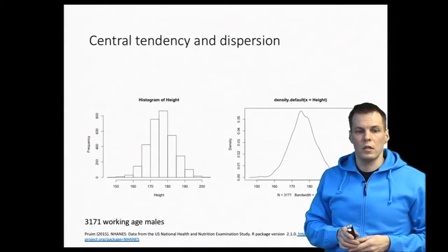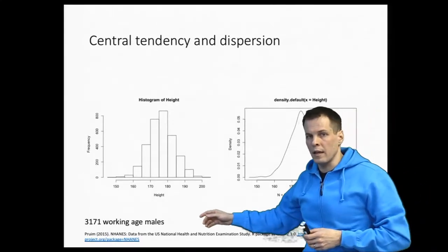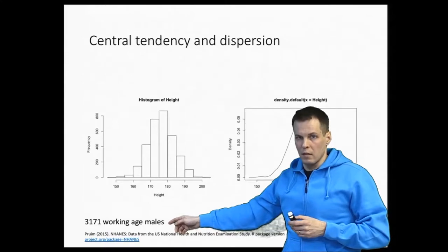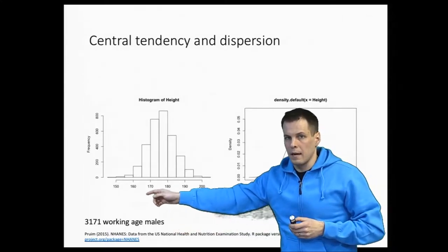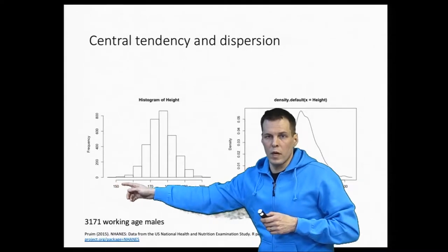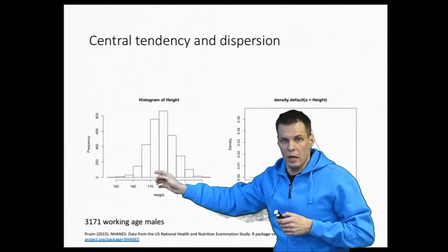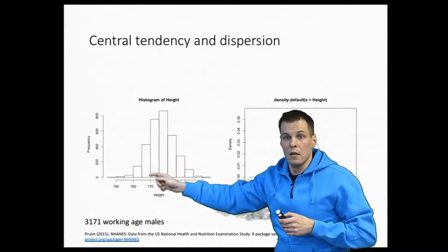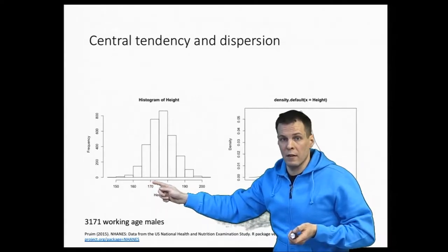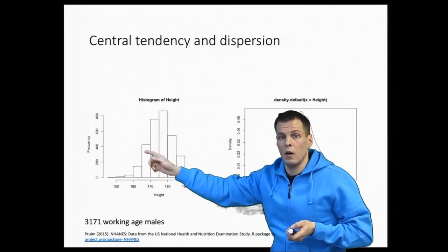The first important concept to know is central tendency. These are data about 3,171 working-age males from the United States, and we have data on their heights. This shows the distribution of the heights. We have some people that are very short, some people that are very tall, and most people fall into bins somewhere in the middle. Each bar presents a group of people — how many people fall into a category, for example 170 to 175 centimeters of height. This is a histogram; it presents how the heights are distributed.